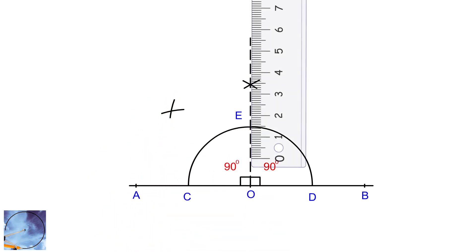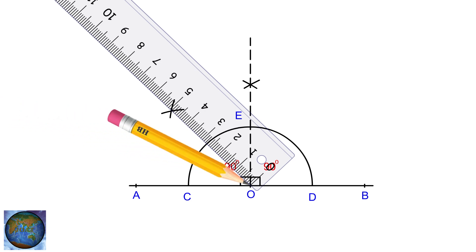Using a ruler, draw a straight line from point O through the intersection. This creates two 45 degree angles.